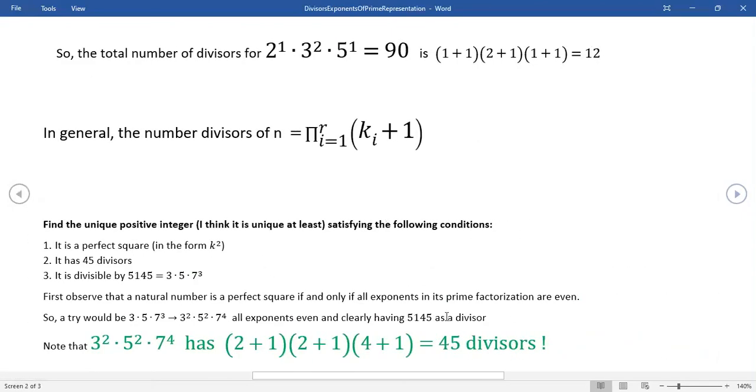and now I want to go through a concrete problem here where I presented this before, and I didn't present a solution, but what I'm looking for here is a unique positive integer that satisfies three conditions. Now, the first condition is it has to be a perfect square. Now, just let me do that with you real quick. I think you all see that, but it turns out a perfect square, by laws of exponents, all of the exponents in the prime factorization have to be even.